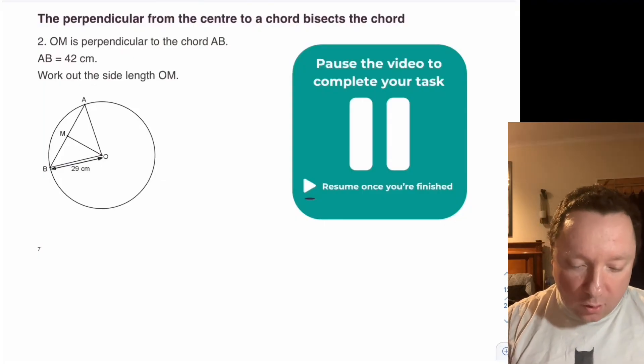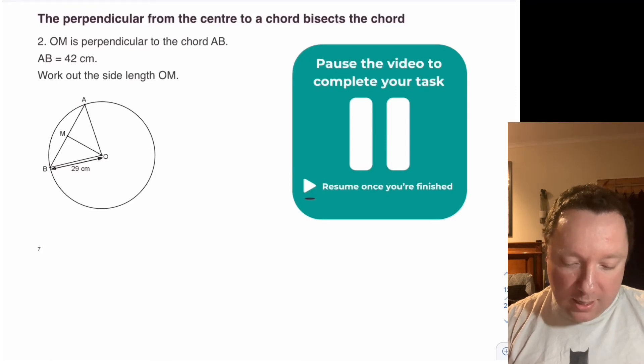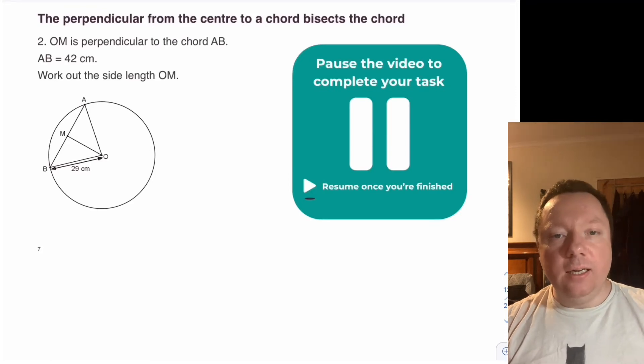So question two says OM is perpendicular to the chord AB. It tells you that AB is 42 centimetres. You have to work out the side length OM. So pause the video here and give it a go.